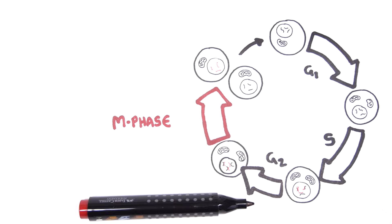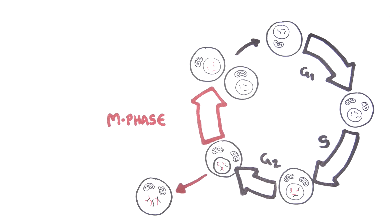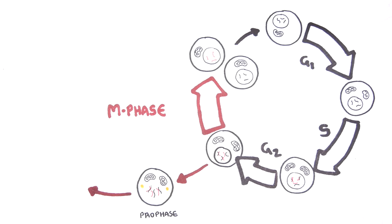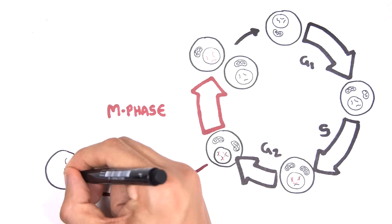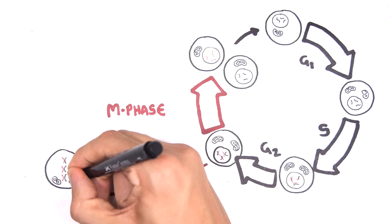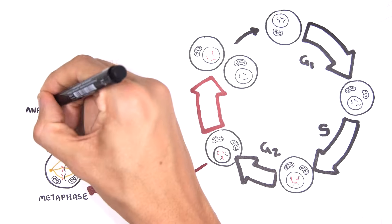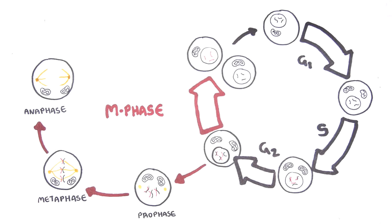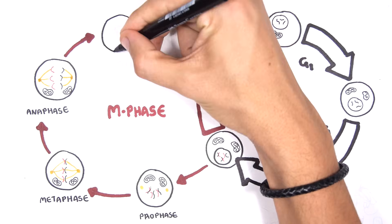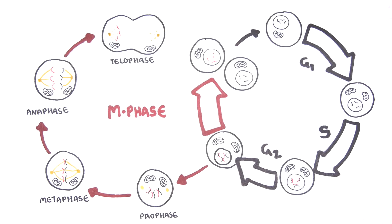We can further explore mitosis, which has several phases. In prophase, the centrosome duplicates and forms microtubules. In metaphase, the chromosomes align in the middle of the cell and the microtubules from the centrosome attach to the centromeres, which are the center points of the chromosomes. In anaphase, the chromosomes are separated and reach either end of the cell. In telophase, the cell membrane constricts ready to separate and a new nuclear membrane is formed.